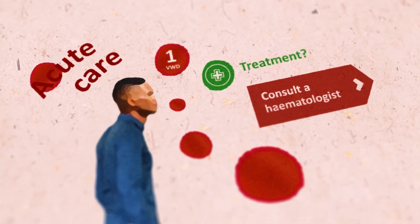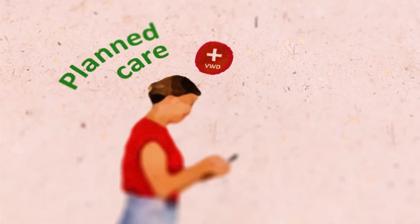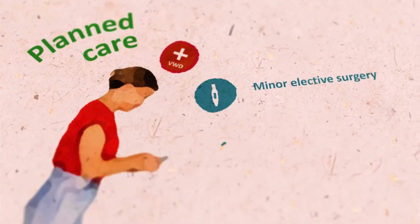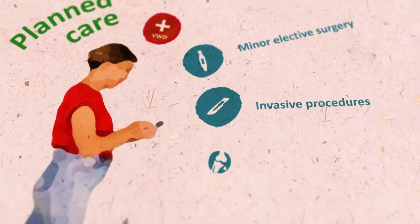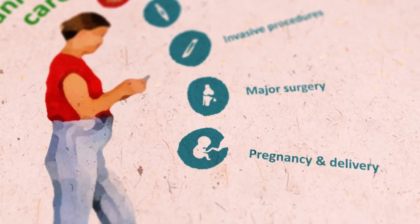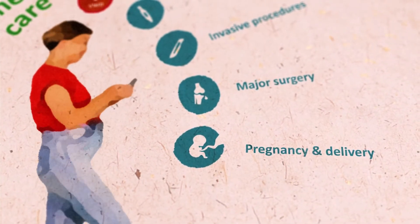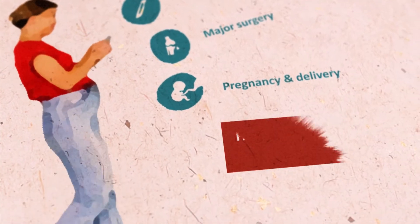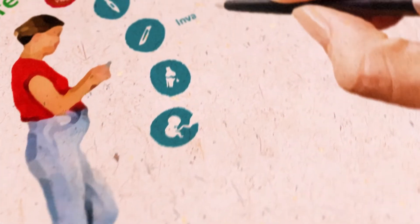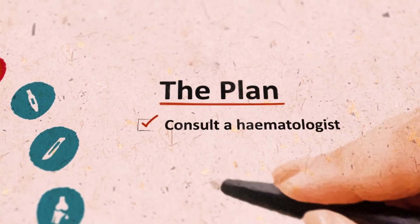Consult a haematologist as soon as possible. In planned care, there are specific circumstances where caution should be exercised as well. Minor elective surgery, invasive procedures, major surgery, and pregnancy and delivery come with an increased bleeding risk, so careful planning is required.